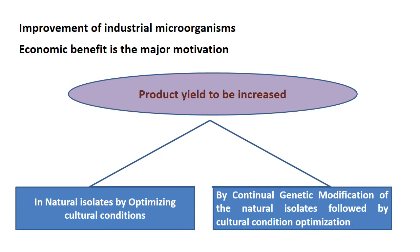To make a microorganism an industrial strain we have to increase its product yield. Generally the isolates obtained during screening and isolation procedures are natural isolates that produce the commercially important product only in very low concentrations. To improve productivity we can increase the product yield either by optimizing the culture medium or by optimizing growth conditions. However, since the potential productivity of an organism is controlled by its genetic material — the genome — we cannot improve productivity much by only optimizing cultural conditions.